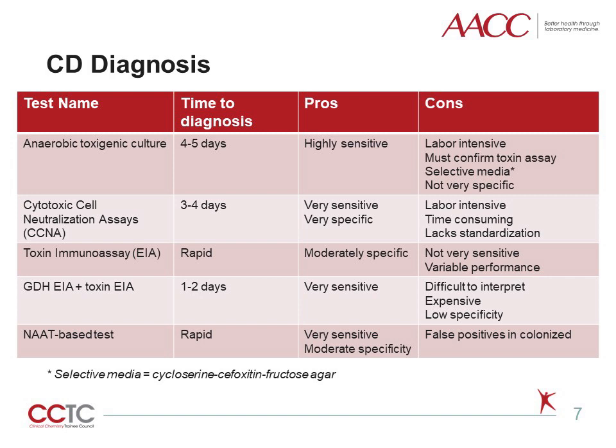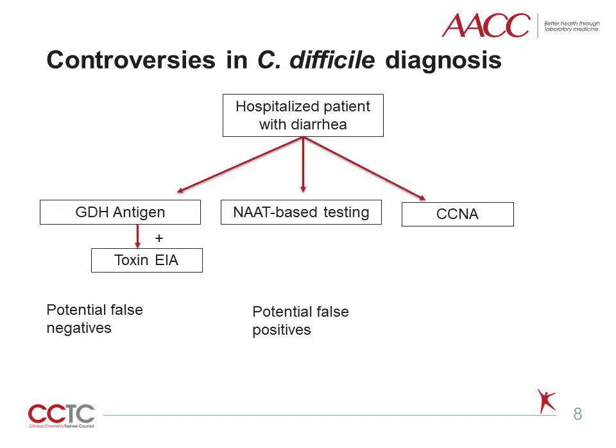Two rapid immunoassay tests may be combined to optimize the sensitivity and specificity of toxigenic C. diff detection. Nucleic acid amplification testing, NAT, detects multiple genetic targets of toxigenic C. diff with a sensitivity of 93% to 98% and a specificity of 98% to 100%. This type of testing often gives the most rapid results, but is prone to false positives. CCNA testing has both high sensitivity and high specificity, but is not practical in the era of rapid diagnostics except to compare newer diagnostic assays.